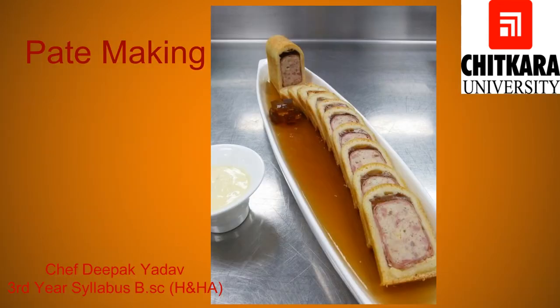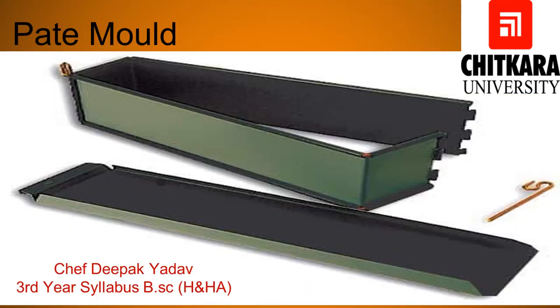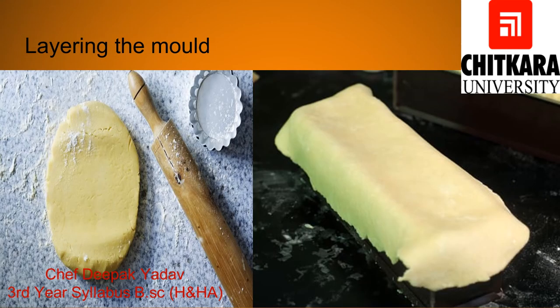Now we will learn how to make Pate. The first step is to choose the right mold. As you can see in this picture, this is the metal mold we are going to use for Pate. The second step is to line the mold. The mold is first lined with rolled-out pie dough, as you can see in the picture. To line a mold, roll out pie dough to a large square and place the mold in the center. Cut it out in a manner so that it easily fits inside the mold with a few inches hanging outside, as this will be used as a covering for the final Pate.